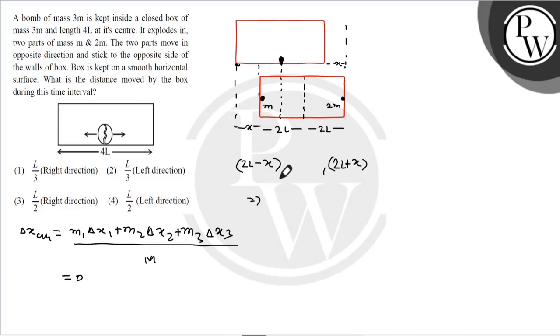Now we substitute m1, which is the box. This mass is 3M, and because its displacement is to the right, we add positive X. For small m, its displacement is to the left, so we add minus M times (2L minus X). And 2m's displacement is to the right, so we add plus 2M times (2L plus X).